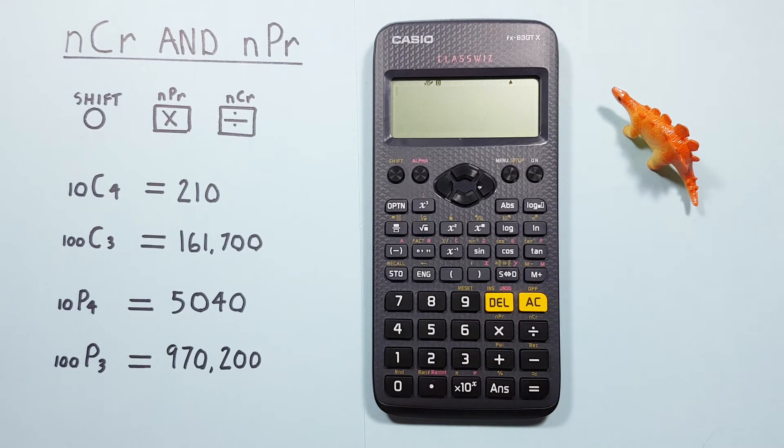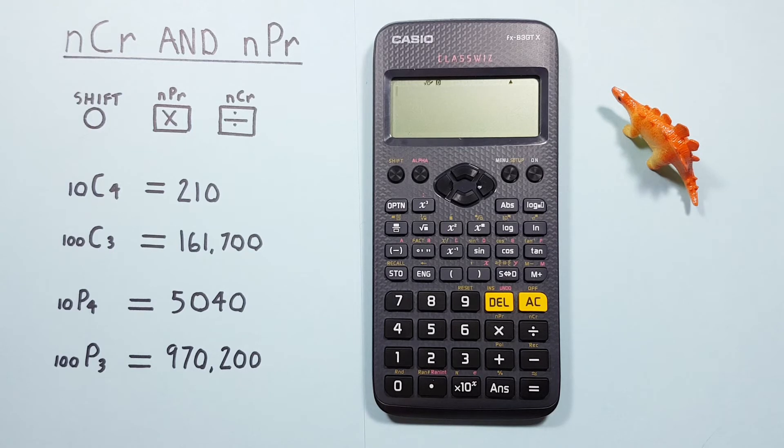Next up, permutations, where we're choosing numbers from a set and the order does matter. So for example, if we have 10 choose 4 permutations,